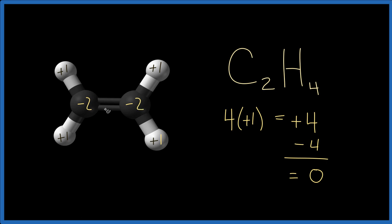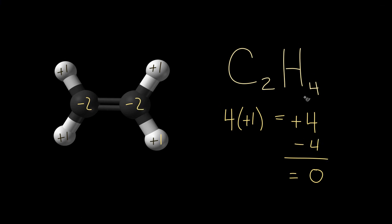Because minus two plus minus two, that gives us the minus four that will balance out to give us this neutral molecule, or the C2H4. So the oxidation number on carbon, each carbon, is minus two.